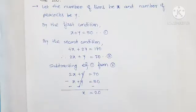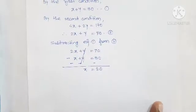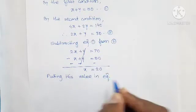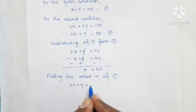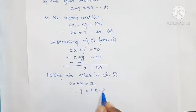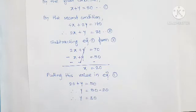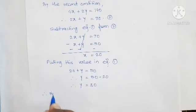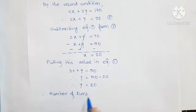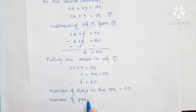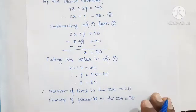Now putting x equals 20 into equation 1: x plus y equals 50. Therefore y equals 50 minus 20, so y equals 30. The value of x is the number of lions and y is the number of peacocks. Therefore, the number of lions in the zoo equals 20 and the number of peacocks in the zoo equals 30.